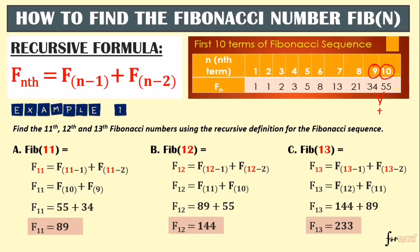So that's how we use the formula to find the n-th term. Of course, the previous terms must be given for us to find the missing Fibonacci number. Or simply put, we just have to add the two previous terms to get the next number — that is the meaning of the recursive formula.